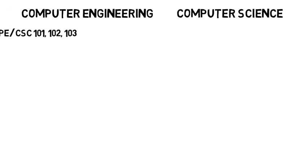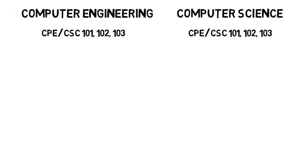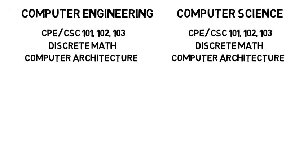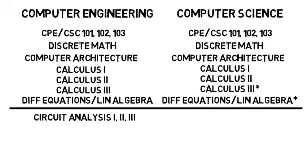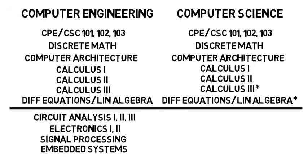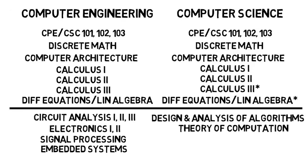So now let's look at an overview of everything. Both majors take the beginning programming classes, often just computer science or engineering 101-3, discrete math, computer architecture, and even a few calculus courses, often all the same depending on the school. Then computer engineers go on to take circuit analysis courses, electronics courses, signal processing, and embedded systems, all of which are taken by electrical engineers. Whereas computer scientists go on to take design and analysis of algorithms and theory of computation, which both involve discrete math. Notice that computer engineers take discrete math, but don't apply it as much, whereas computer scientists really do.